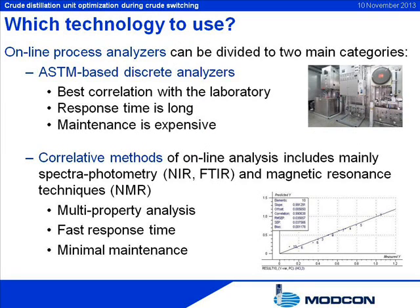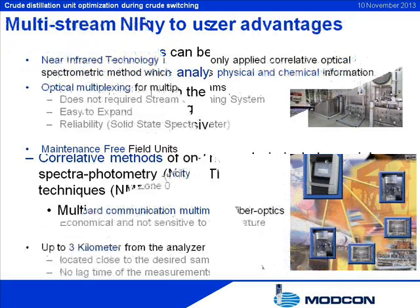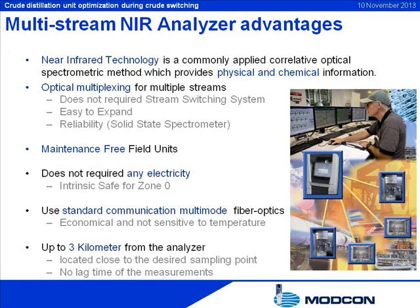Many dedicated ASTM-based analyzers are required to achieve this goal; however, their cost of installation and maintenance is high. Spectrometry-based correlative analyzers are able to perform simultaneous multiple measurements of a variety of physical properties. NIR analyzers are usually simple to install, very reliable, and require minimum maintenance. However, this technique is not linear and not all components in the sample are clearly resolved, so any changes in stream composition or process conditions require the model to be updated.